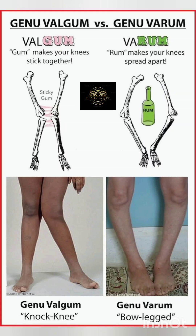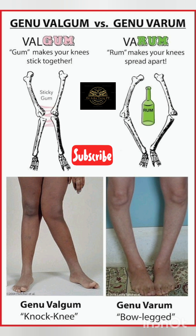Genu valgum and genu varum are two types of knee deformities that can arise from various factors, including genetics, injury, or underlying health issues. Early diagnosis and treatment are essential for optimal prognosis.